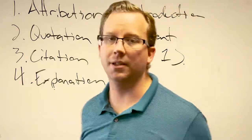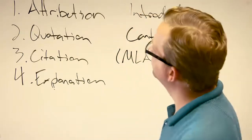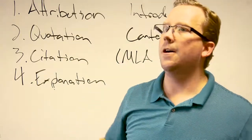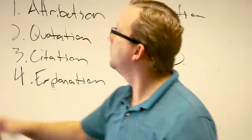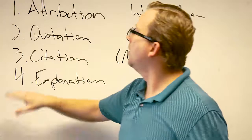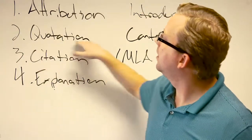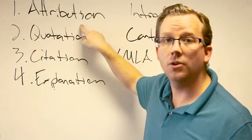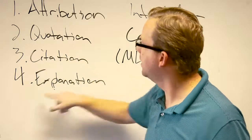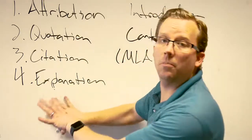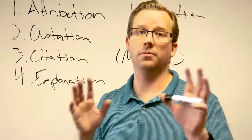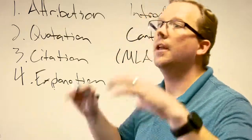Let's run through this one more time. You start with attribution — you name-drop the source and introduce them. Then you go into the actual quotation, which could be a direct quote or a paraphrase — you're using the content from the source you introduced. You cite it at the end of the sentence, and then, however long it takes, you follow that with an explanation of the source material.